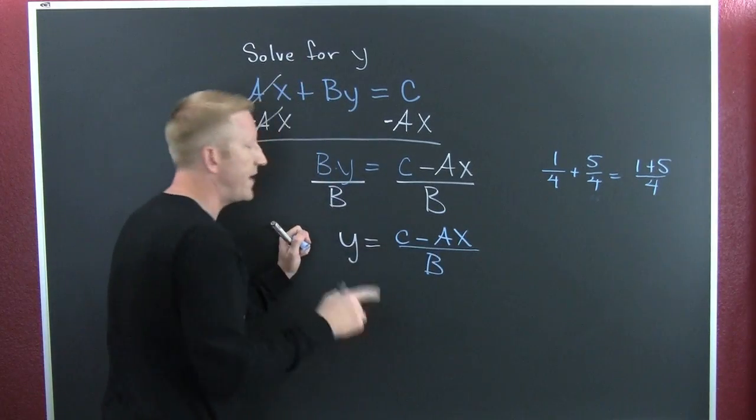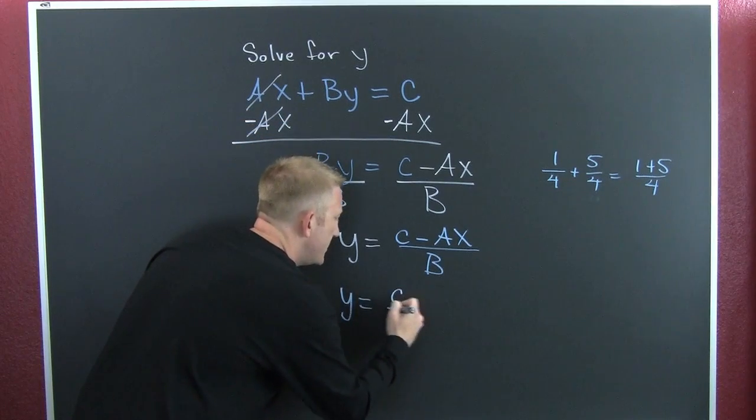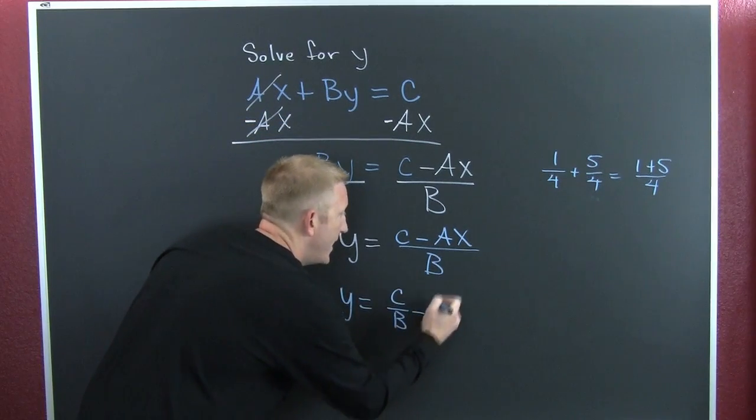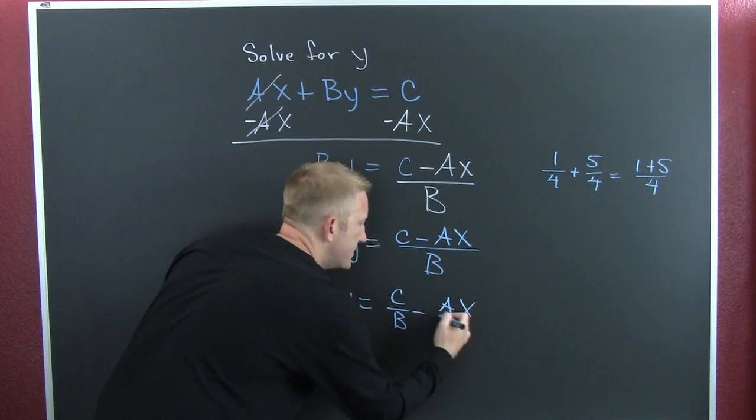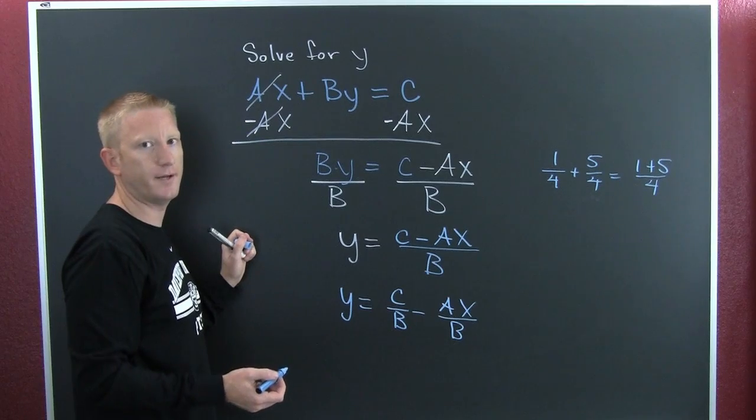So then this y is going to be c over b minus ax over b, and that alternatively would be another answer. Either one.